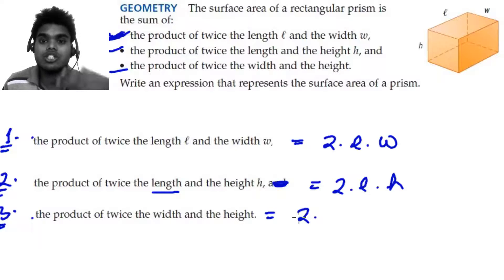So the product of twice the width and the height. Two times - it means two times. Product means multiply, right? Width and the height.